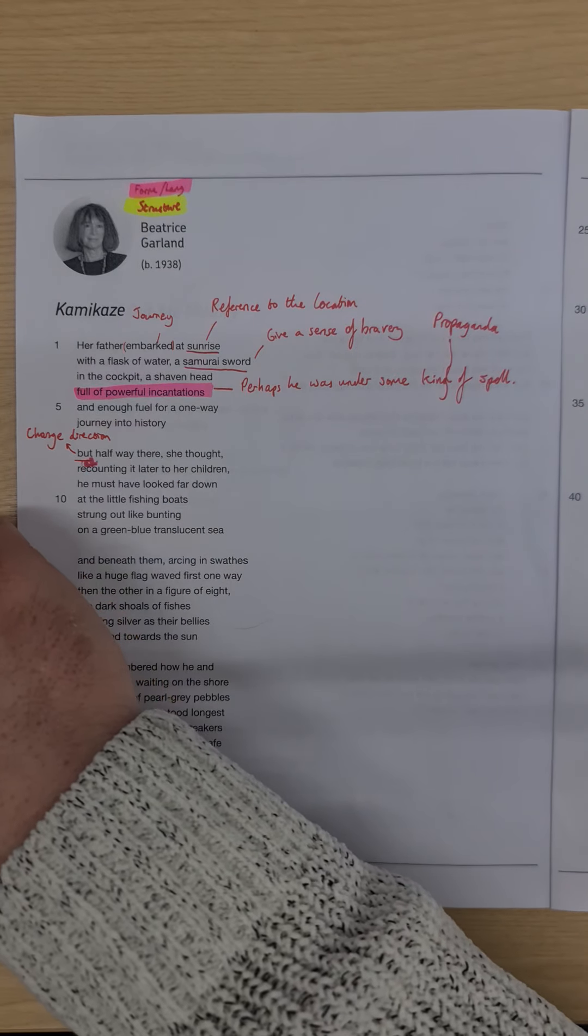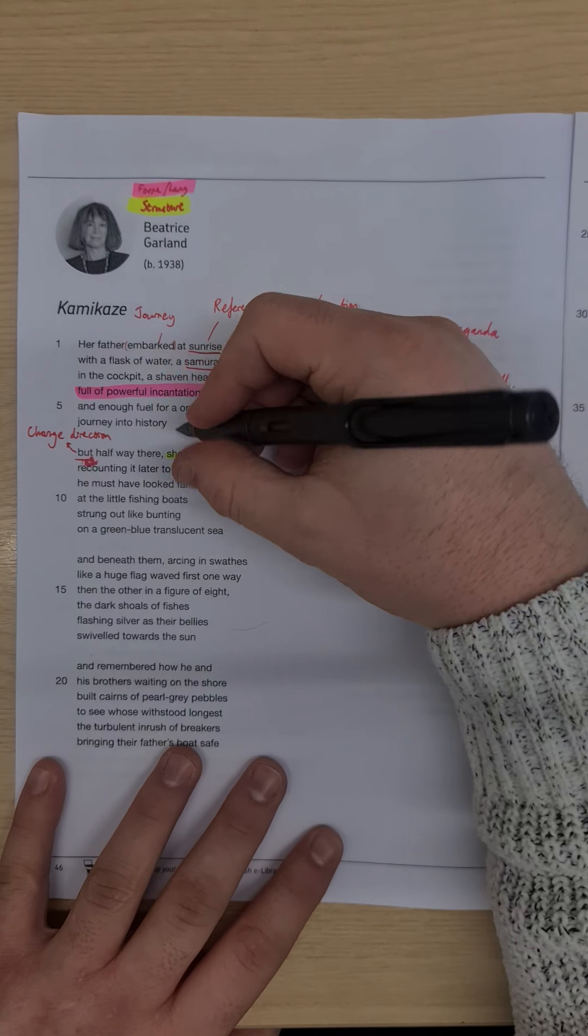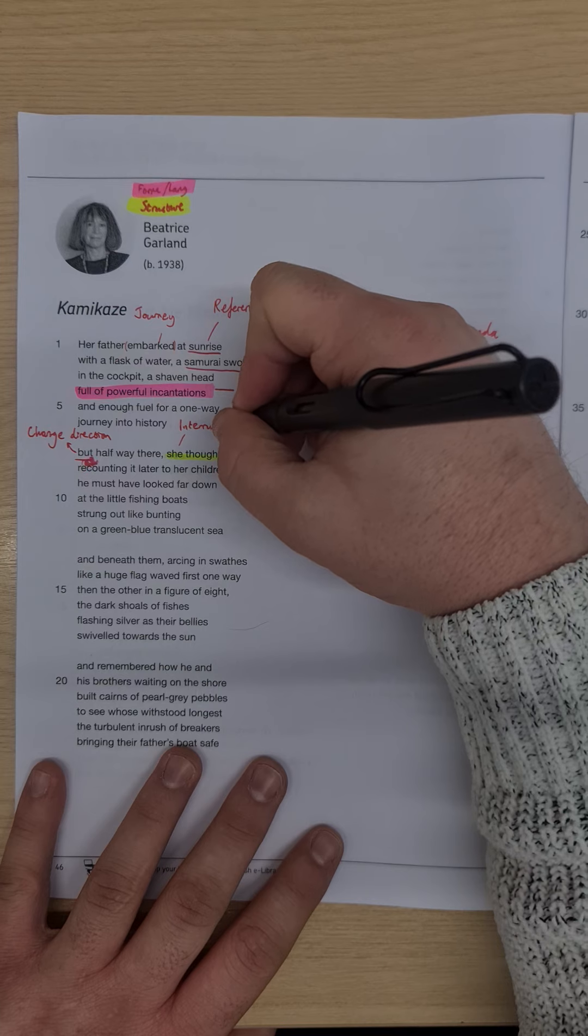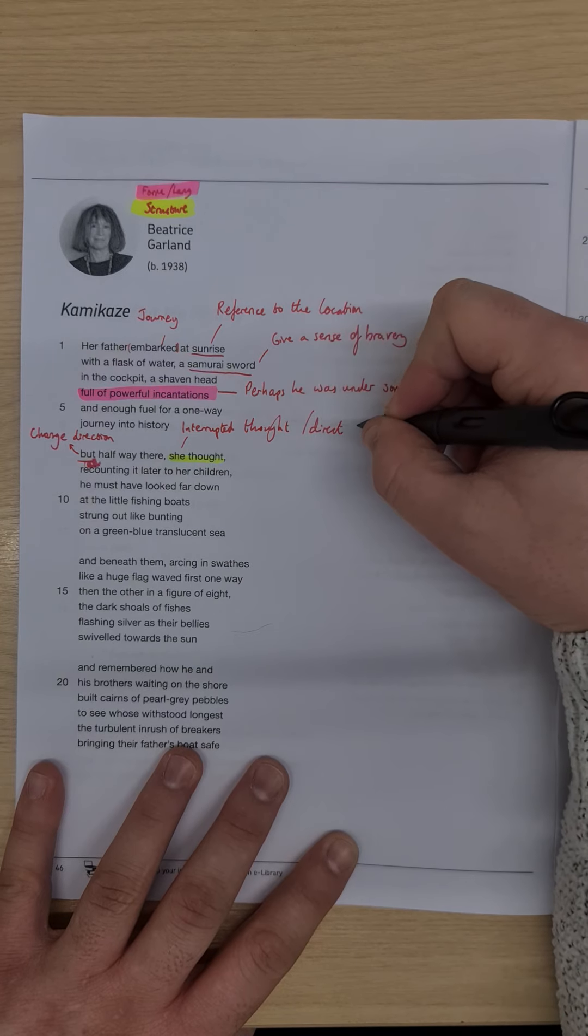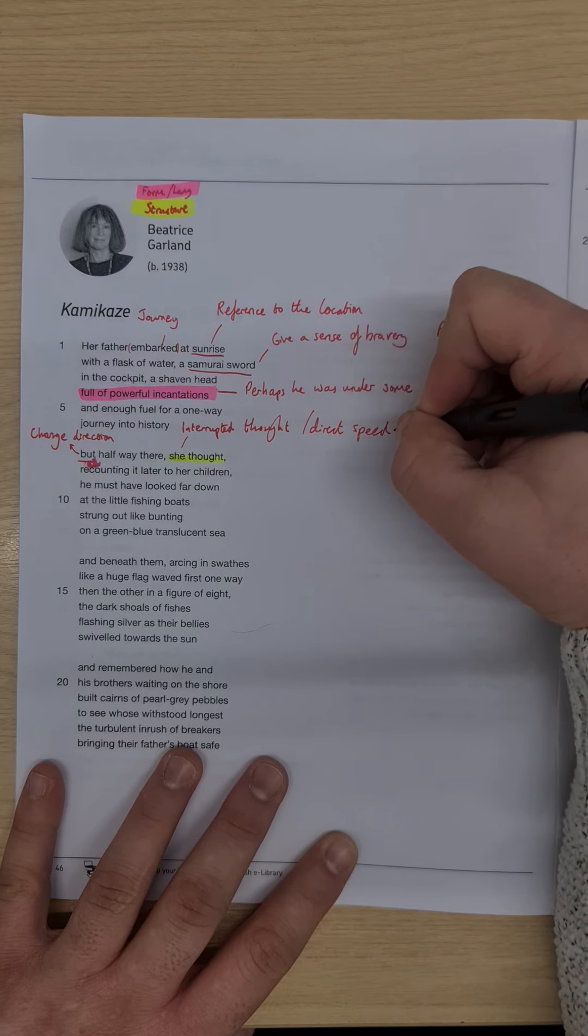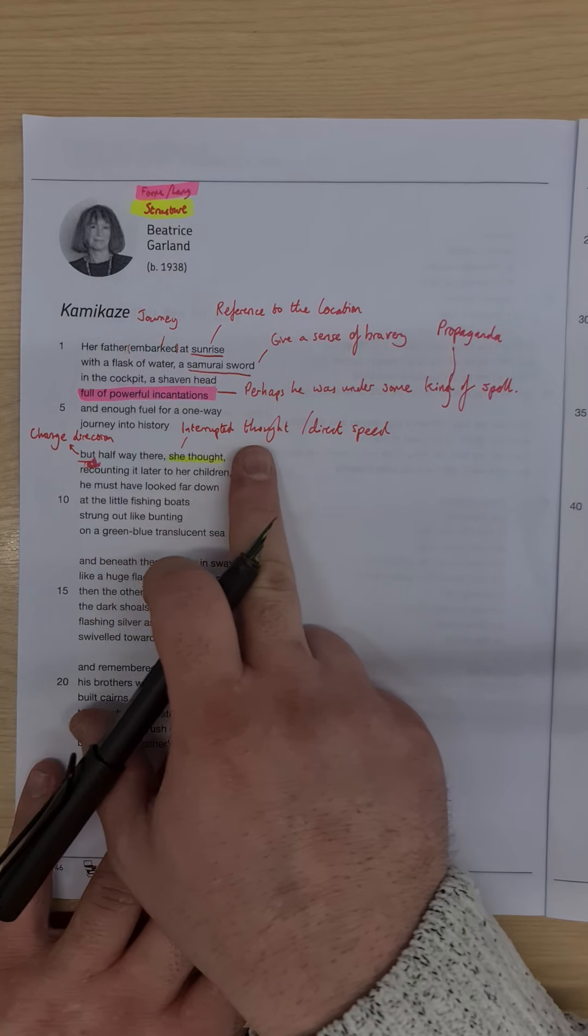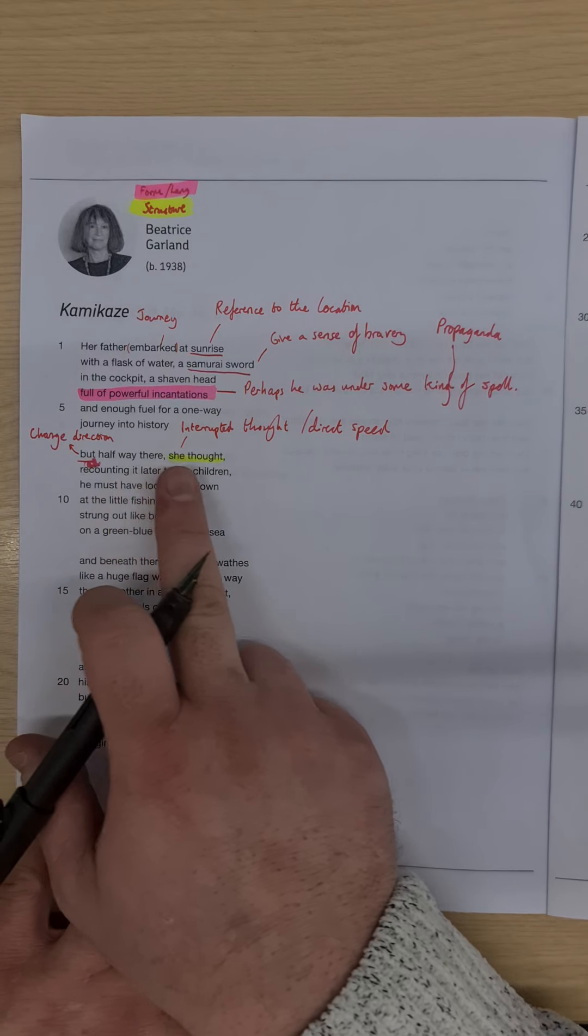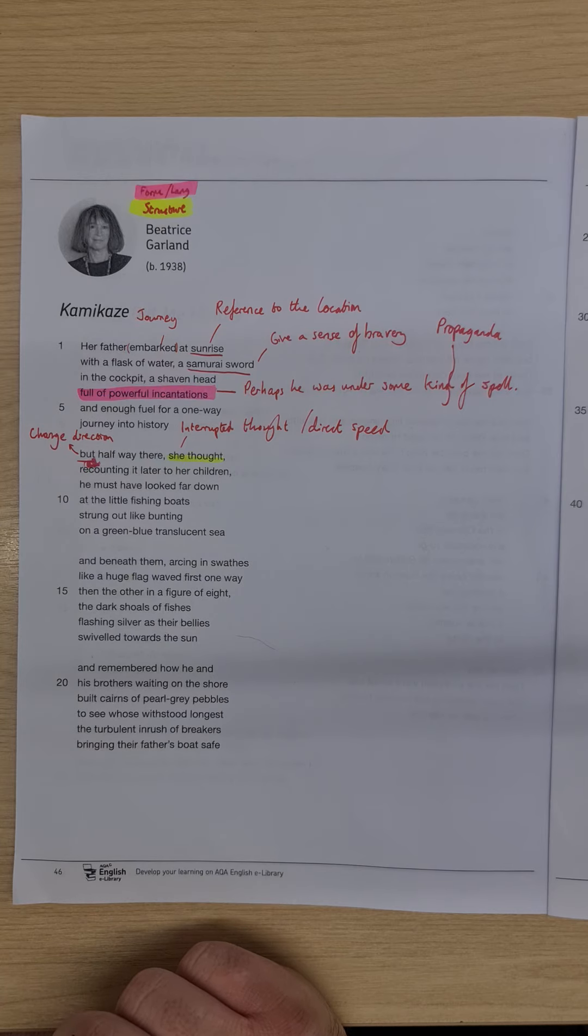So here we have this direct speech idea. And the fact that we've included that direct speech here, 'she thought,' now we have this idea of interrupted thought process. That this is all one story, 'she thought.' Halfway there, she thought. She's not sure. Recounting it later to her children, just to confirm that she is retelling the story.